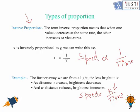There is another example which says that the farther away we are from the light the less bright it is. So if the distance increases, the brightness decreases and if the distance decreases, the brightness increases. So we can say that this is an example of inverse proportion.